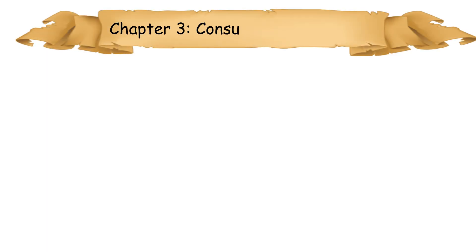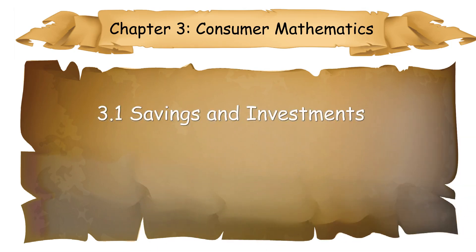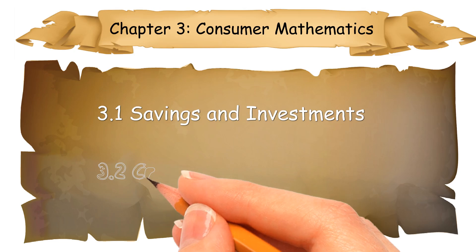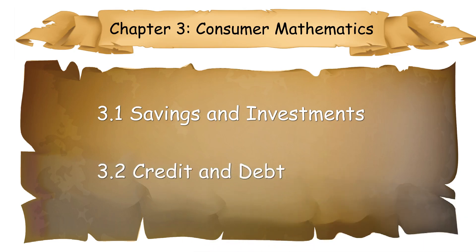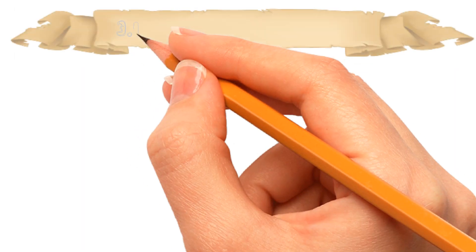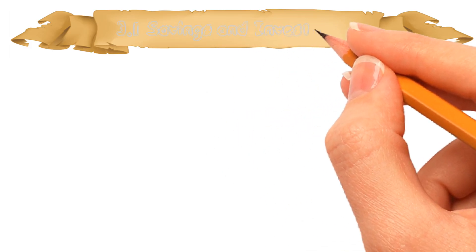Hi, I'm Teacher Daisy. Now, let's learn Form 3 Chapter 3 Consumer Mathematics. In this chapter, you will learn 3.1 Savings and Investments and 3.2 Credit and Debt. First, we go to 3.1 Savings and Investments.